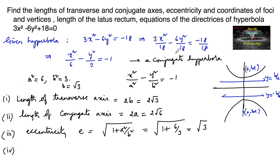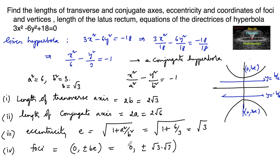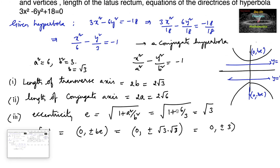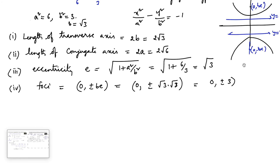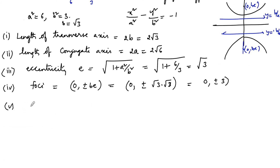The foci are at (0, ±be). Since b equals √3 and e equals √3, we get foci at (0, ±3), because √3 × √3 equals 3. The vertices for a conjugate hyperbola are at (0, ±b), which equals (0, ±√3).